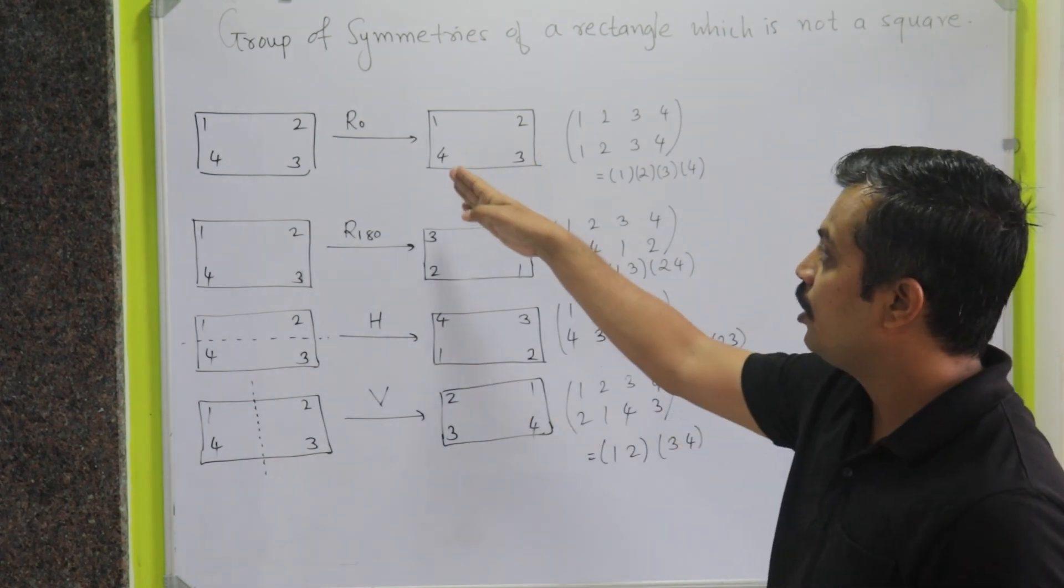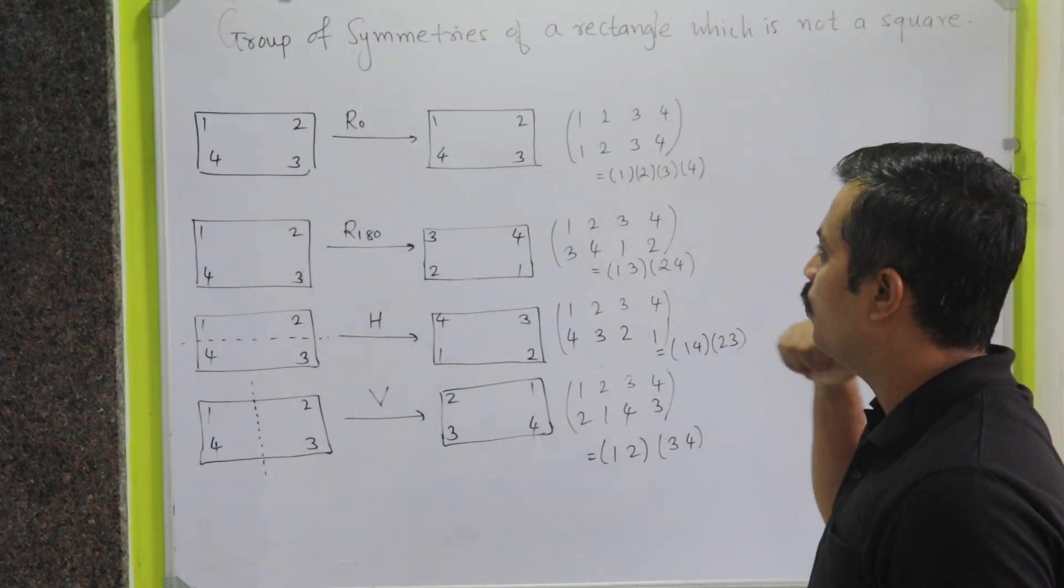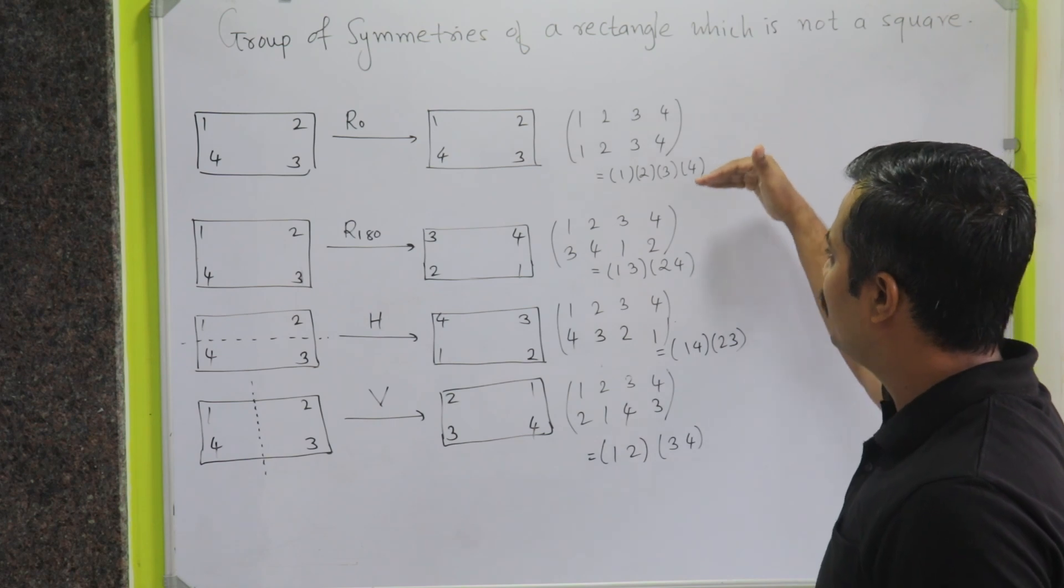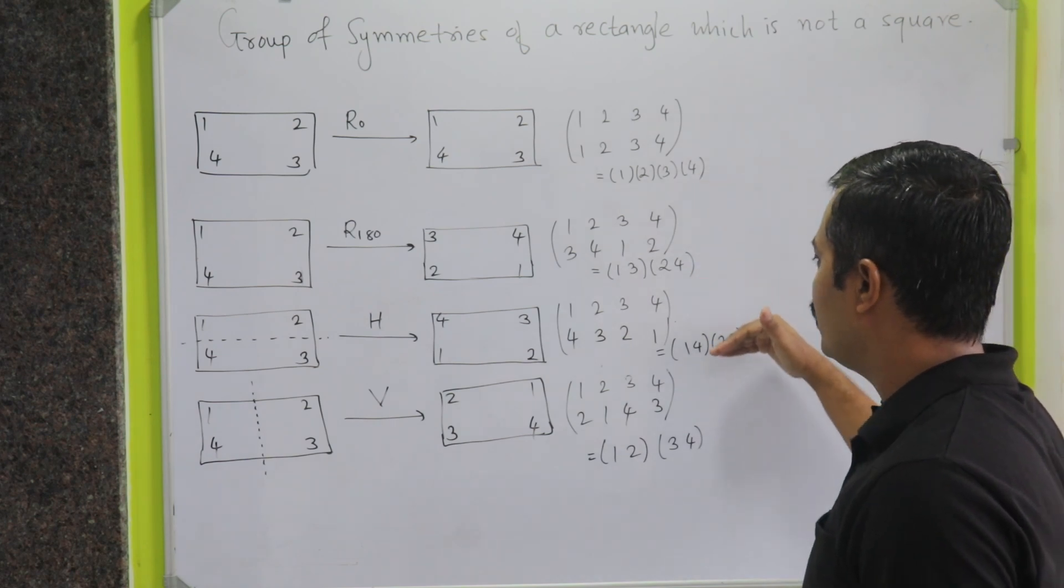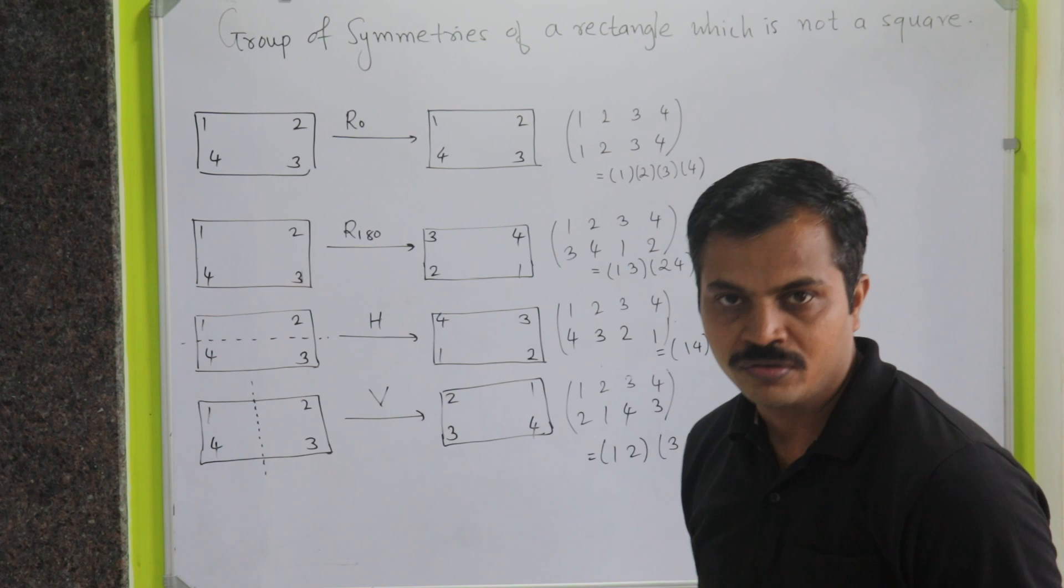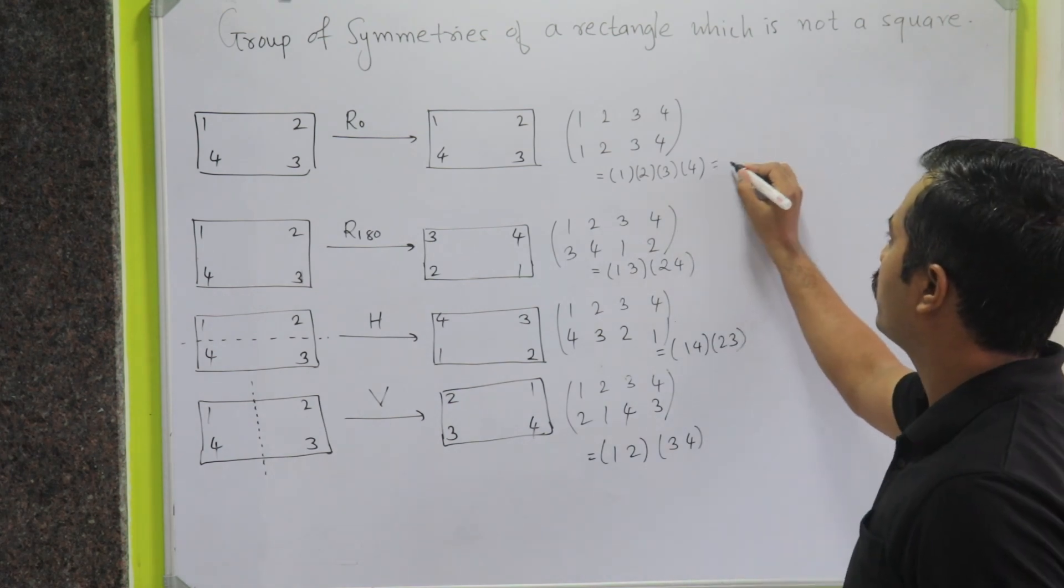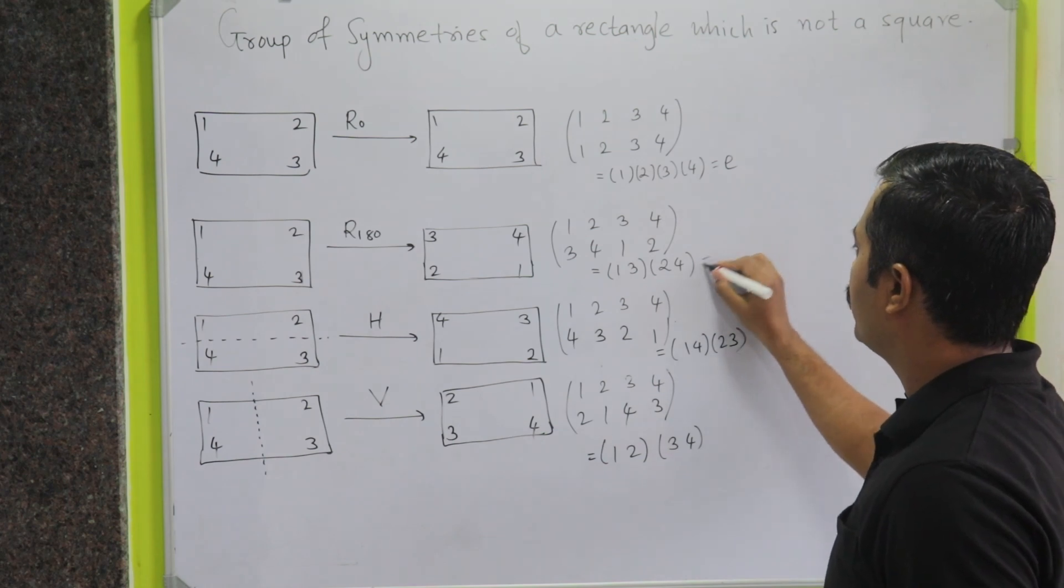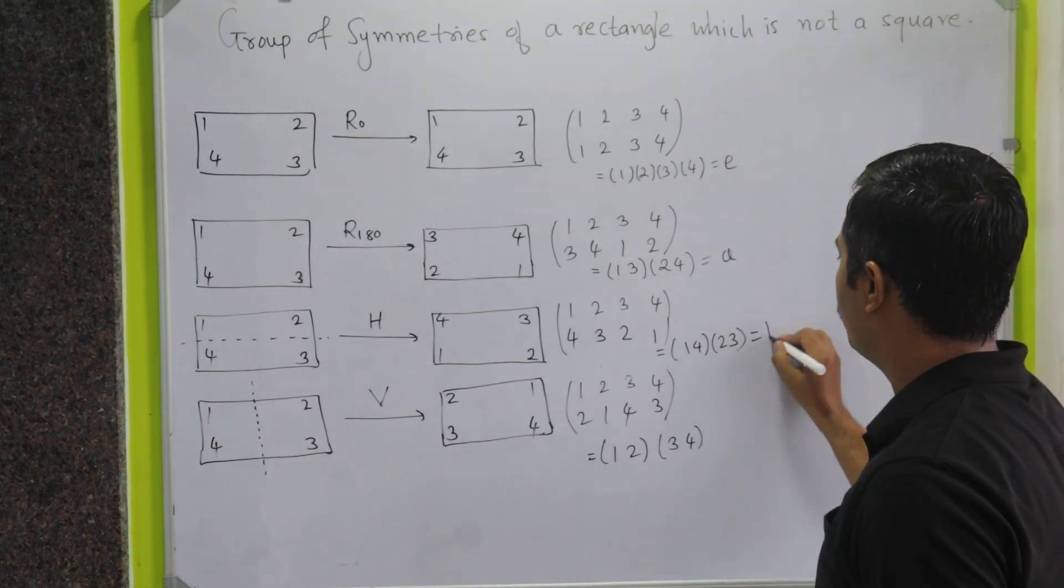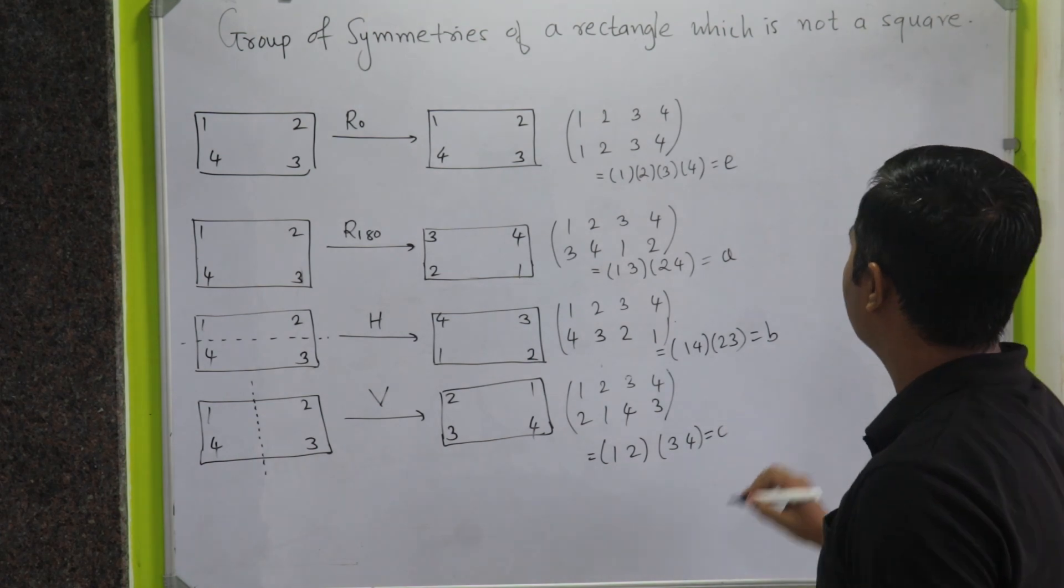Now what I have done corresponding to each symmetry, I have written a permutation. I have also expressed that permutation in cyclical notation. Now what I will do is I will do names. I will call it as E, I will call it as A, I will call it as B, and I will call it as C.